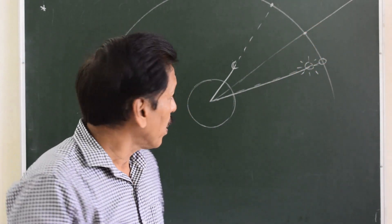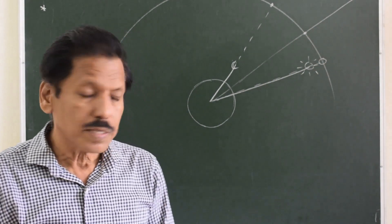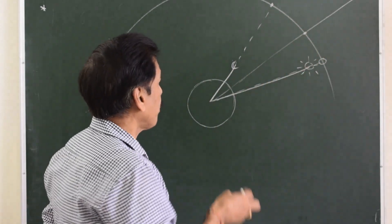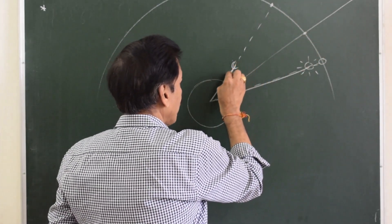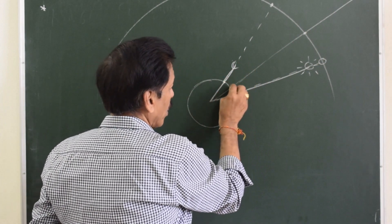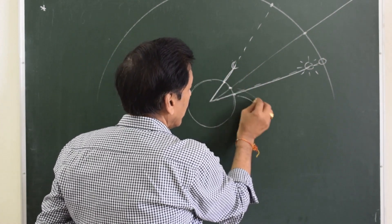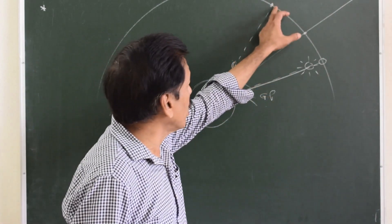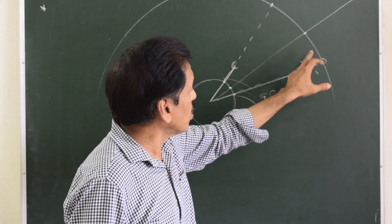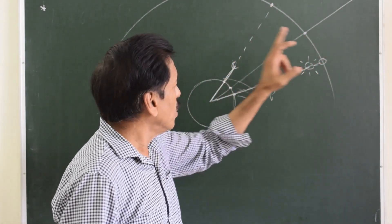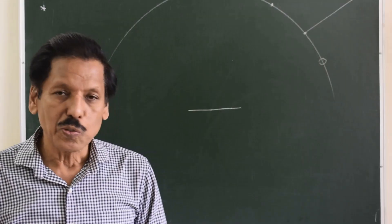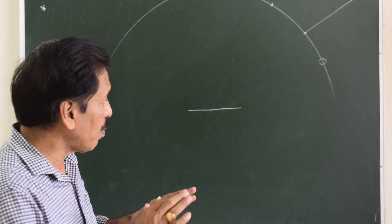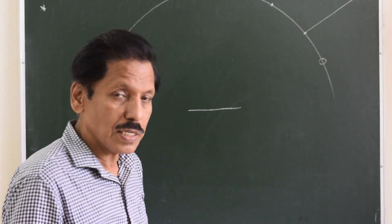The point at which this direction line meets or cuts the surface of the Earth is the body's geographical position. So the geographical position of the Moon is here, the geographical position of the star is here, and the geographical position of the Sun is here. Just as we have projected all heavenly bodies on the celestial sphere, we can also project everything on the Earth onto the celestial sphere.